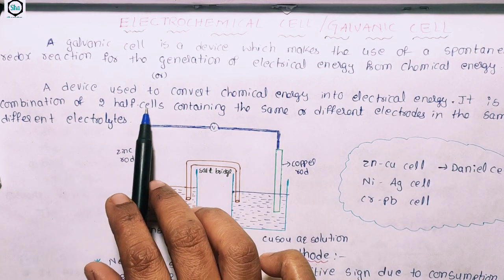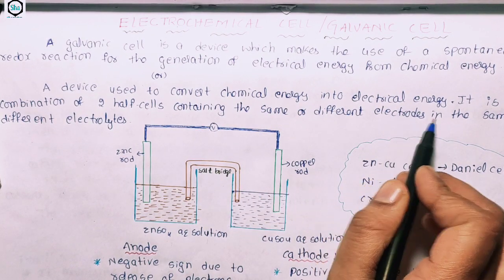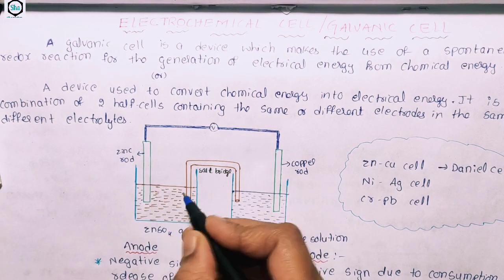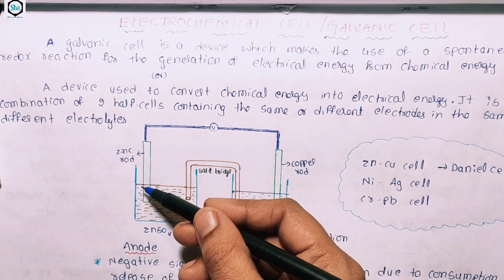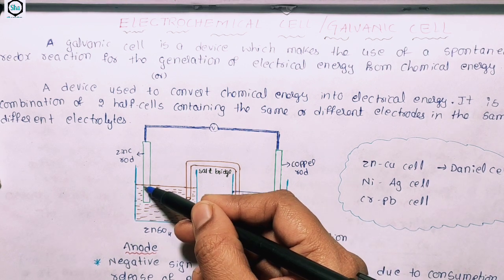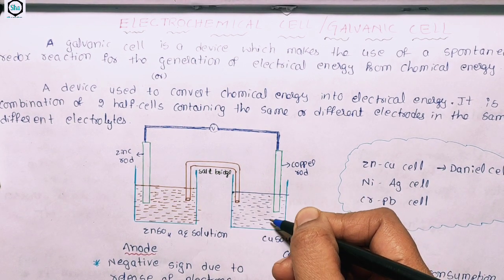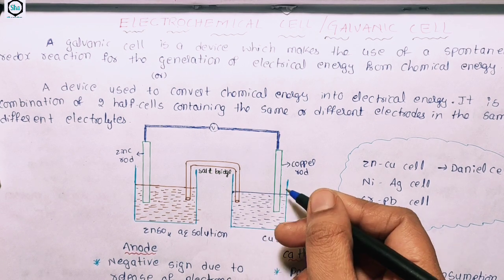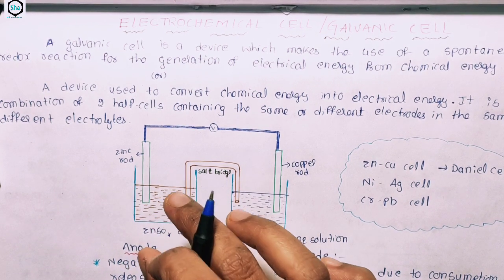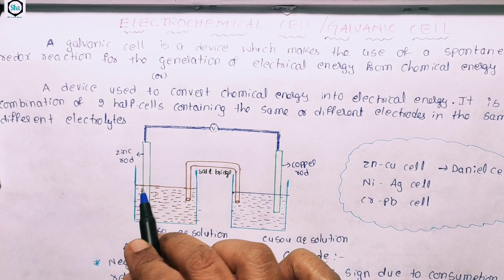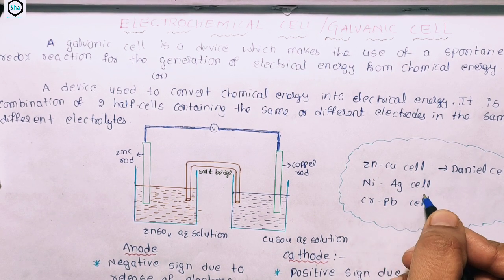The electrochemical cell is a combination of two half cells. Each half cell contains the same or different electrodes in the same or different electrolyte. There are various cells like nickel, silver, chromium, and lead cells.